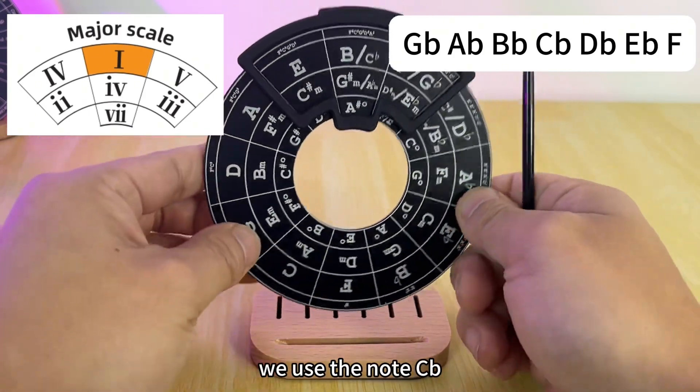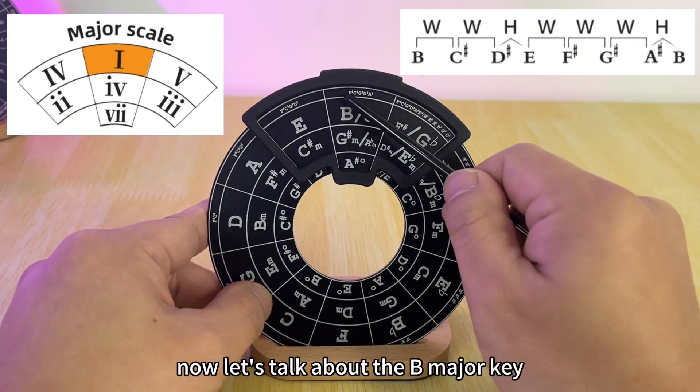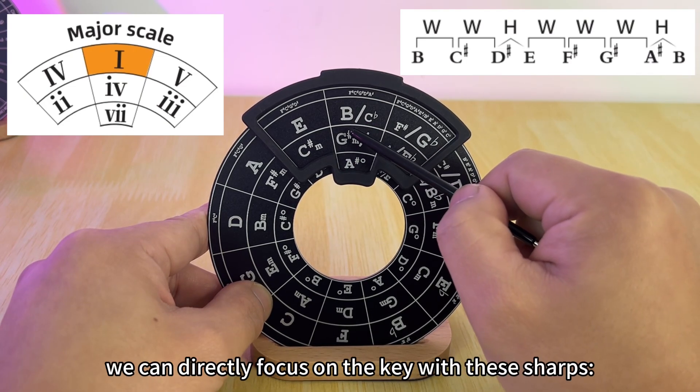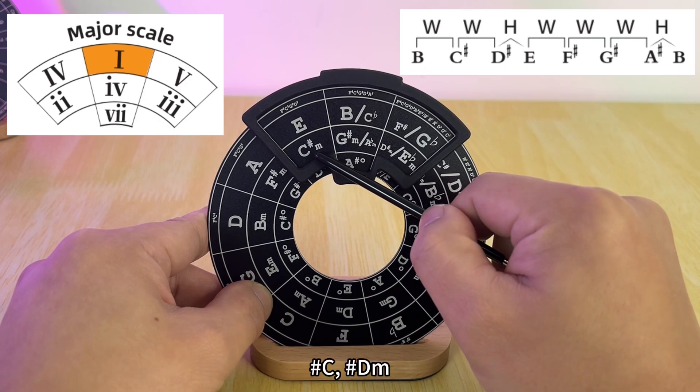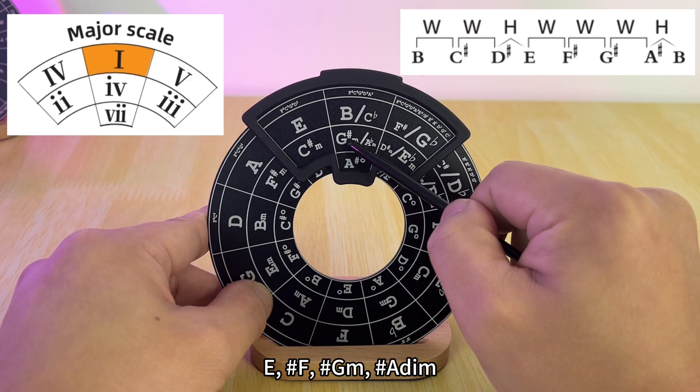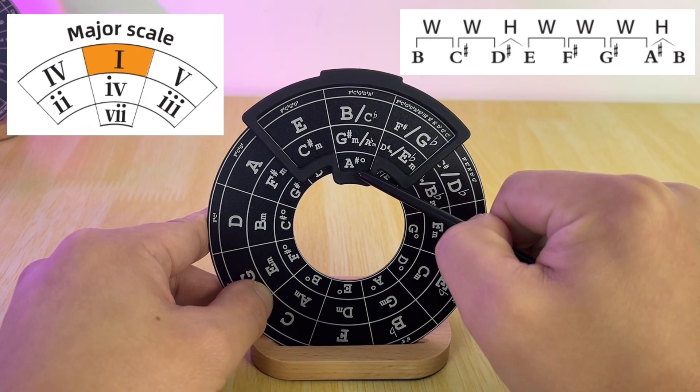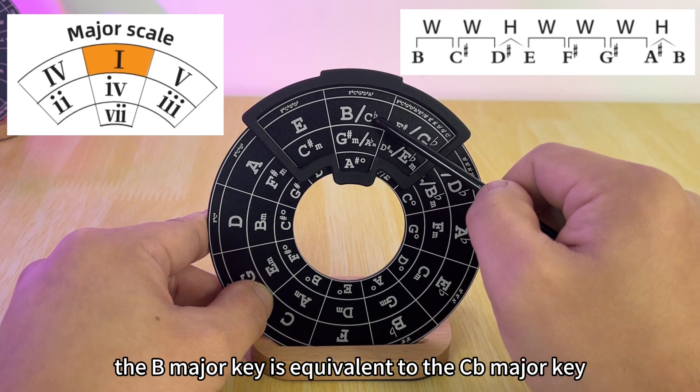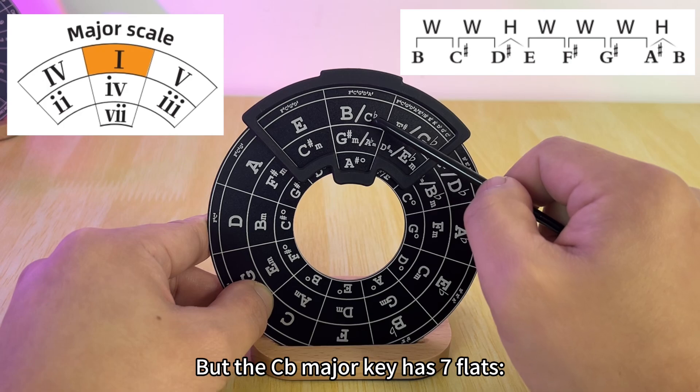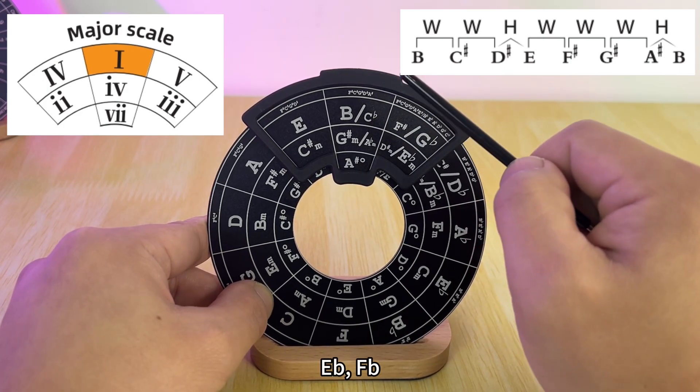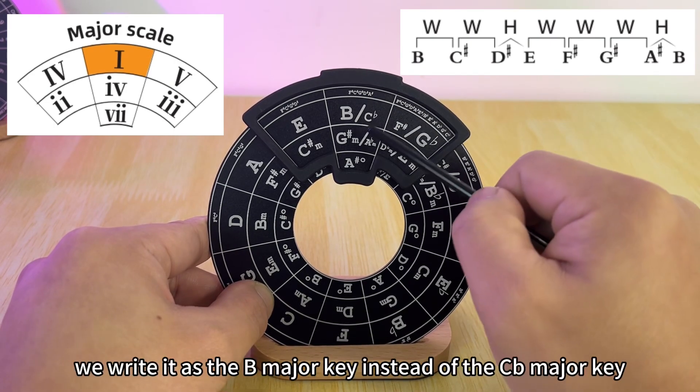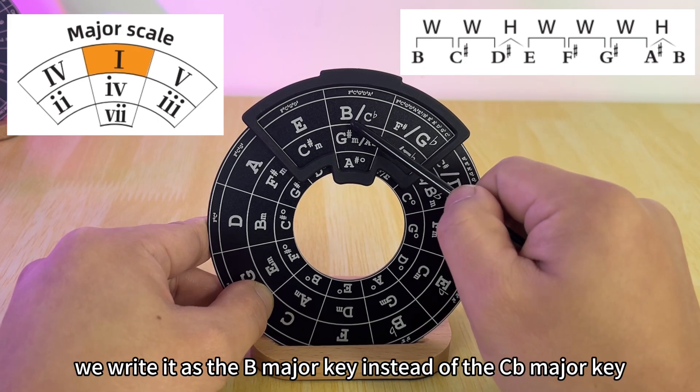Okay, now let's talk about the B major key. The B major key actually has five sharps. For the B major key, we can directly focus on the key with these sharps: B, C♯, D♯m, E, F♯, G♯m, A♯ diminished. Of course, the B major key is equivalent to the C flat major key. C flat is the same pitch as B, but the C flat major key has seven flats: C♭, D♭, E♭, F♭, G♭, A♭, B♭, C♭. So generally we write it as the B major key instead of the C flat major key.